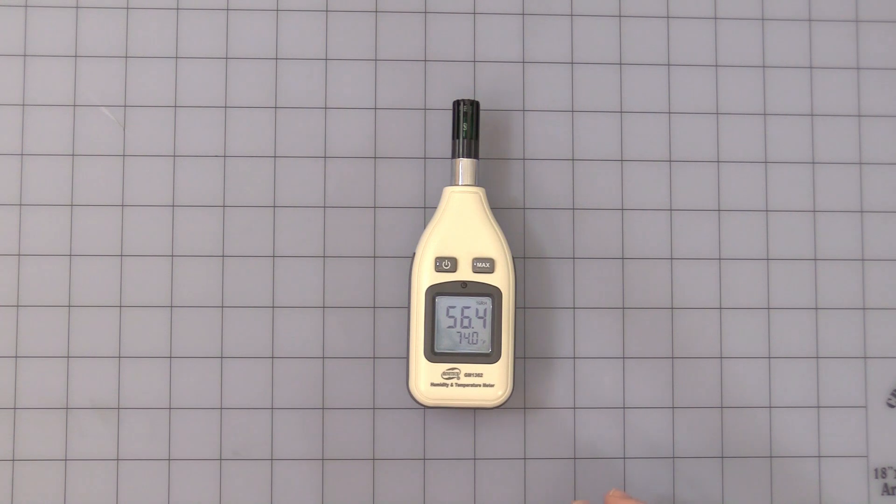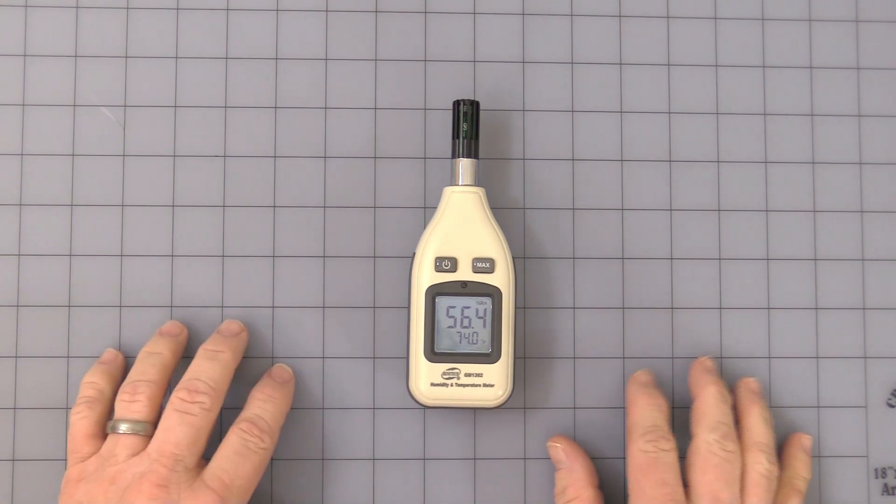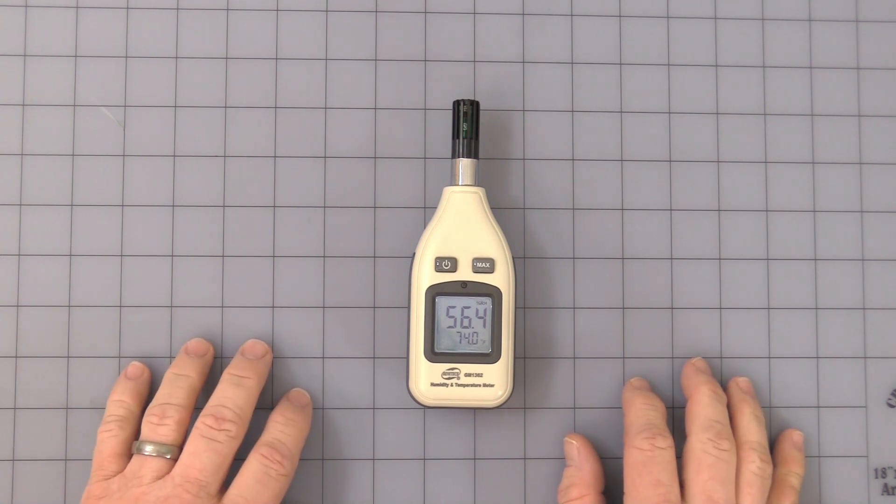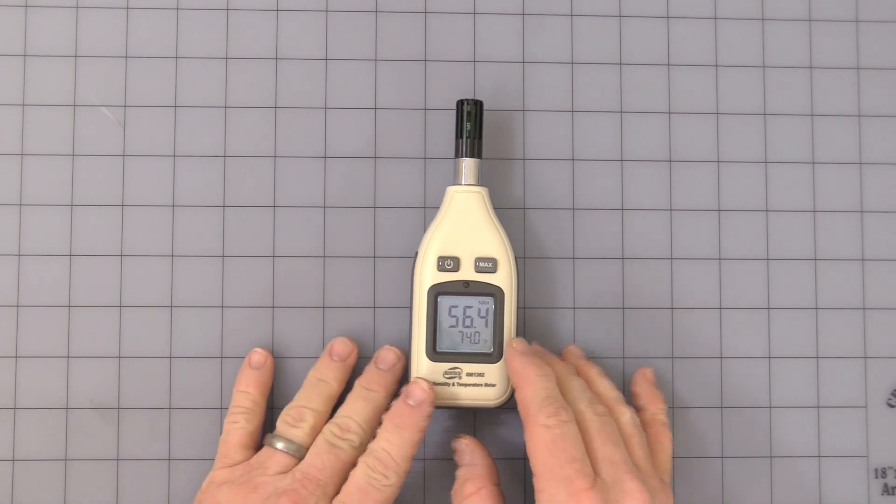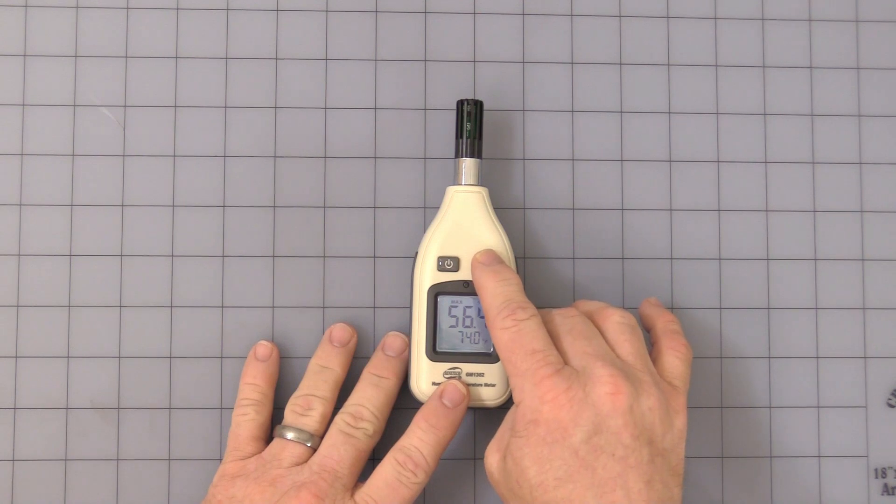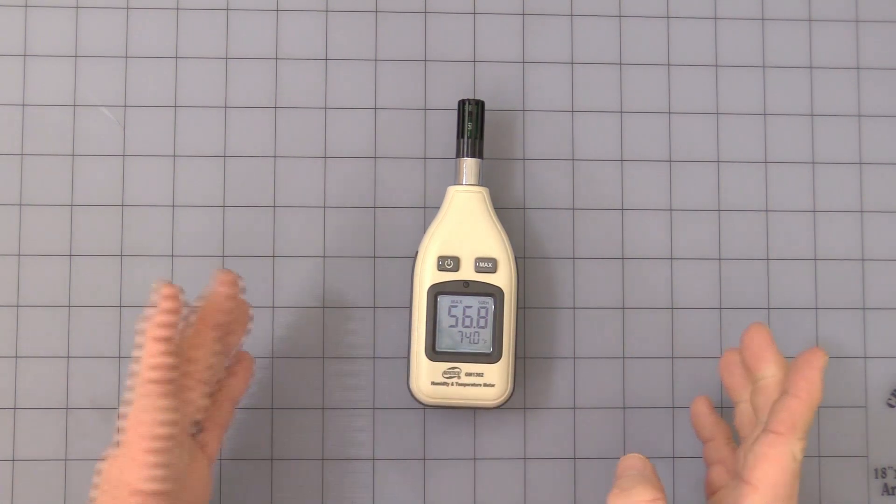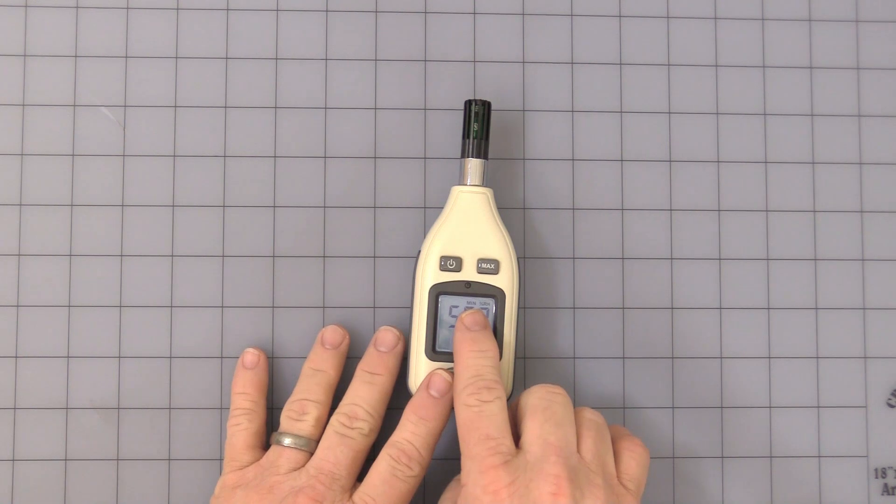This caused me a little confusion, so let me explain it to you and see if we can stop some phone calls and some emails. When you press and hold the max button, you get a display called max. Press it again, it goes to minimum.